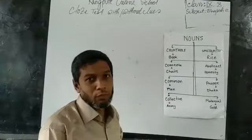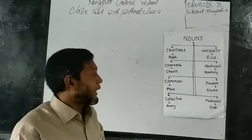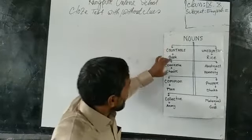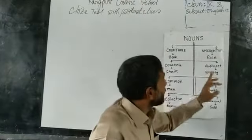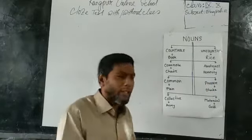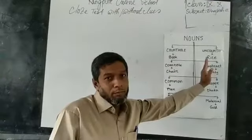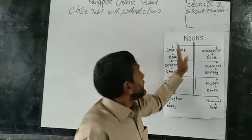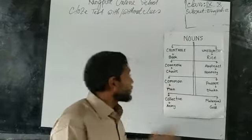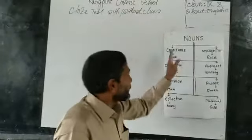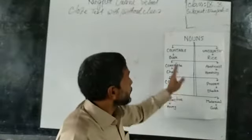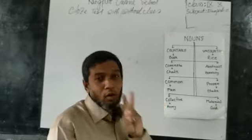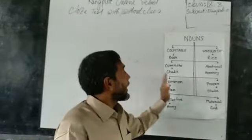Here we will go into the deep study of nouns. For your nice understanding, I have made two columns. You know, totally we have countable nouns, concrete nouns, common nouns, collective nouns, uncountable, abstract, proper, and material nouns. I have made two boundaries — two columns. Countable, concrete, common, and collective — these are the same categorized nouns. All these nouns have the same characteristics. These four nouns — countable, concrete, common, and collective — you must remember the names first.